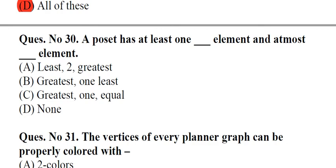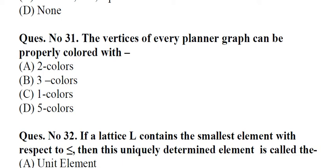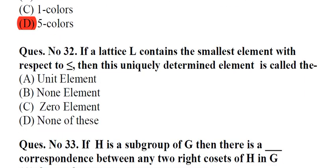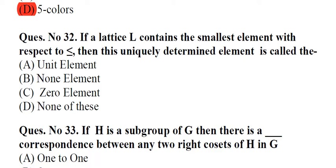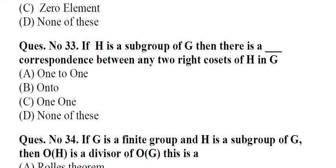Question number 30: A poset has at least one underscore element and at most underscore element. A. Least, 2 Greatest, B. Greatest, 1 least, C. Greatest, 1 equal, D. None. Question number 31: The vertices of every planar graph can be properly colored with dash. A. Two colors, B. Three colors, C. One colors, D. Five colors. Answer: D, Five colors. Question number 32: If a lattice L contains the smallest element with respect to less than or equal to, then this uniquely determined element is called the A. Unit element, B. None element, C. Zero element, D. None of these. Answer: A, Unit element.